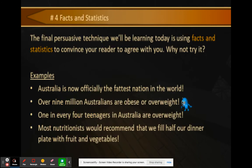We've made it to step four. The fourth way to persuade people is with facts and statistics — probably the most effective technique to convince a reader. People believe others who have credentials, PhDs, and doctorates more than they believe you or me. For example: 'One in every four teenagers is overweight in Australia,' or 'Most nutritionists recommend we fill half our dinner plate with fruits and veggies.' Those statistics make a real impact and can lead someone to change.